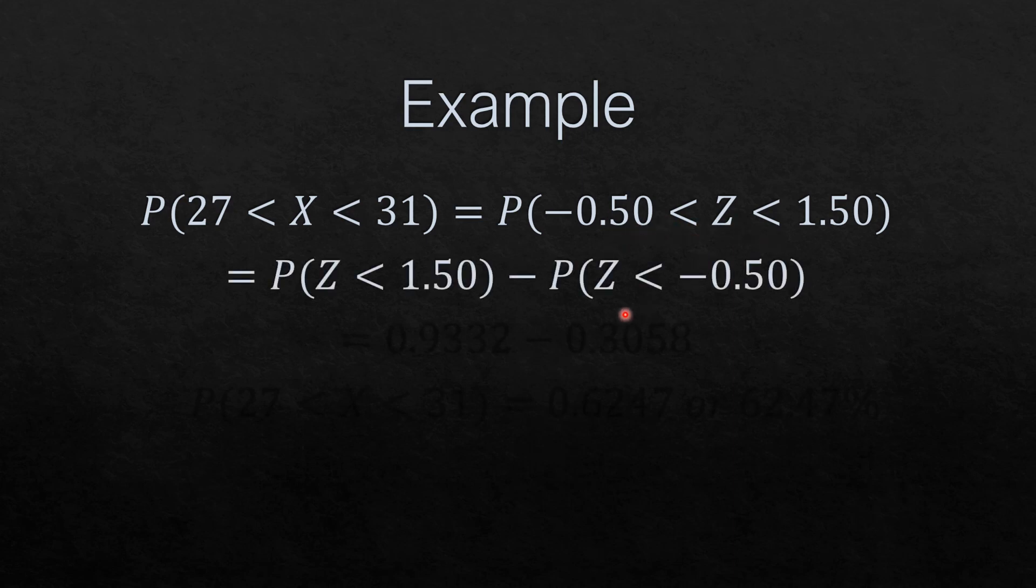As we know, we can also write it as probability of Z less than 1.5 minus probability that Z is less than negative 0.5.